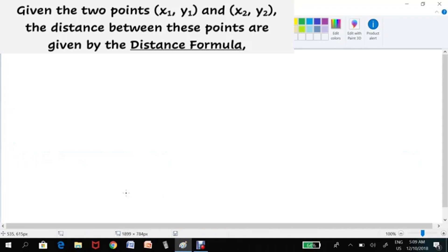Given two points (x₁, y₁) and (x₂, y₂), the distance between these points is given by the formula d equals the square root of (x₂ - x₁)² plus (y₂ - y₁)².